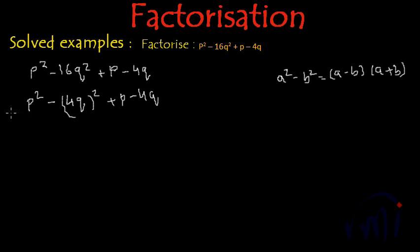So this can be written as p minus 4q multiplied by p plus 4q plus, let me put this p minus 4q in the bracket. Now, we have p minus 4q over here and we have one more p minus 4q over here.